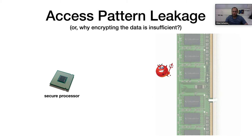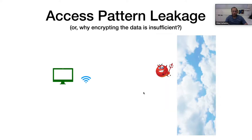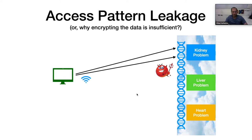What is the problem that ORAM comes to address? Suppose we have a secure processor and an untrusted memory, or a client that uploads information to an untrusted cloud. Even if the uploaded information is encrypted, the access pattern — the memory locations that the client accesses — reveals sensitive information. For instance, if a medical doctor uploads genomic information of a patient to the cloud and always accesses regions related to the kidney, the server can infer that the patient has some kidney problem and not, say, a heart problem. This is a leakage that we want to prevent.